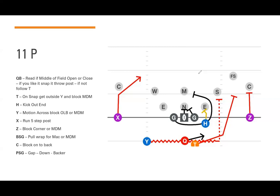The Y is going to motion on the quarterback's foot, coming across to take the outside backer or the most dangerous man. The Z blocks the corner in front of him on that side. The backside guard pulls around, wrapping off the H's butt and sealing whatever's coming from the inside — usually the inside linebacker or the most dangerous man he sees first.